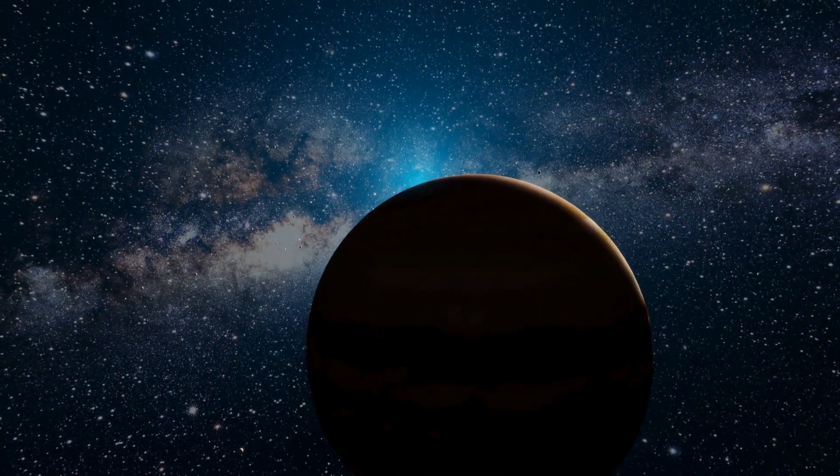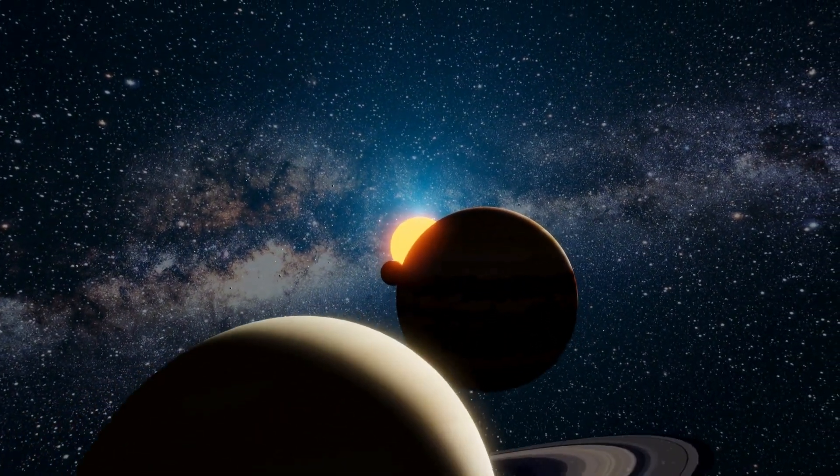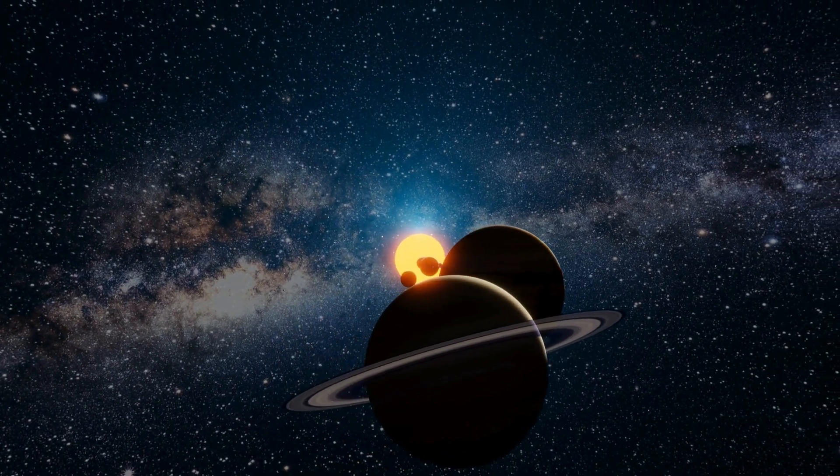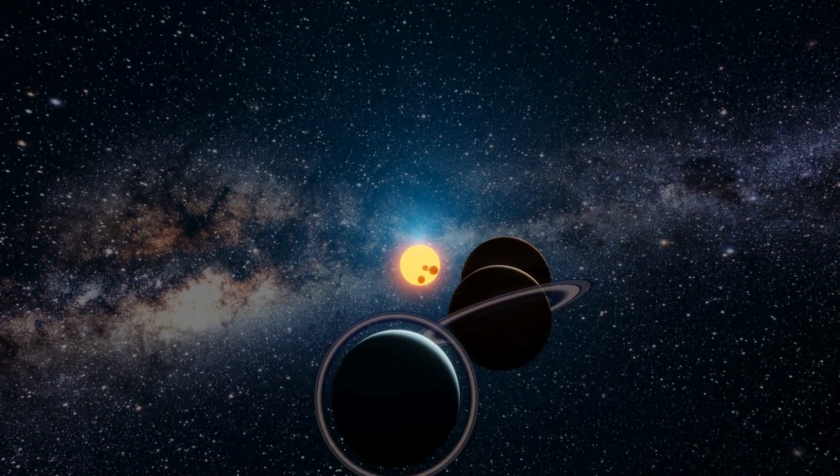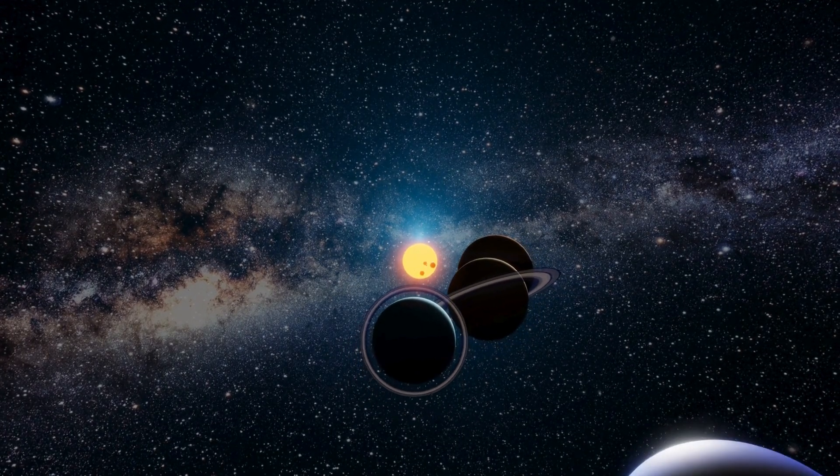Beyond the inner planets, there's a group of giants: Jupiter, Saturn, Uranus, and Neptune. They're like the big siblings, each with its own ring of bling! And Jupiter, oh my! It's the largest of them all!